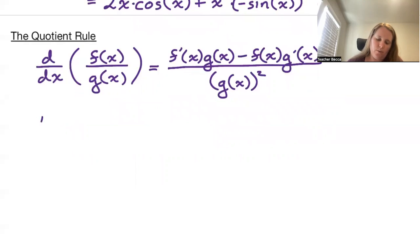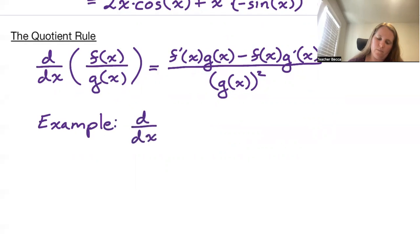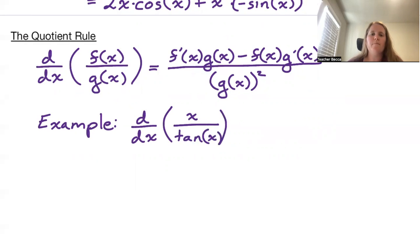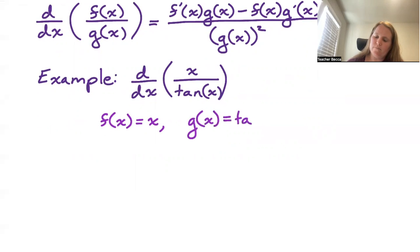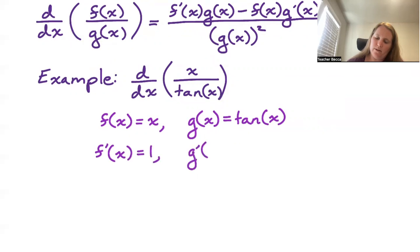For example, if we wish to take the derivative of x over tangent of x, we take x to be our f of x since it's on top, and tangent of x to be g of x. Then f prime of x is 1, and g prime of x is secant squared of x.